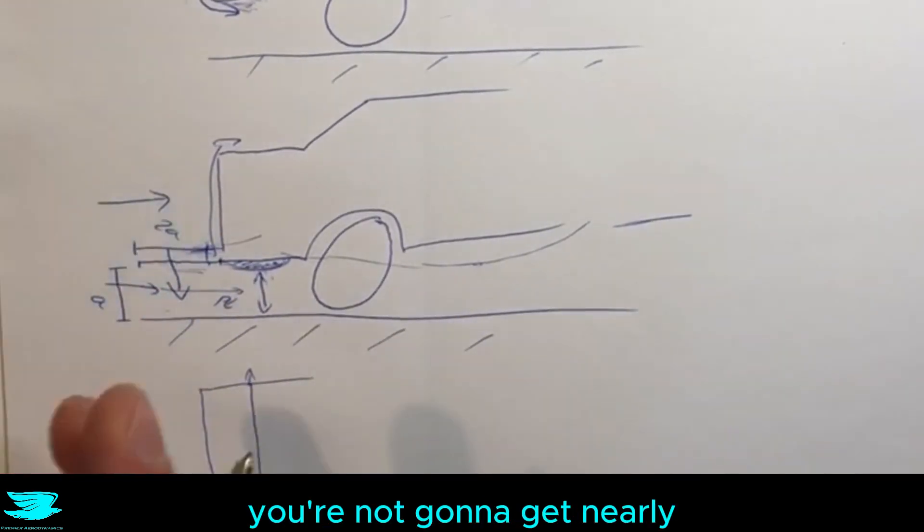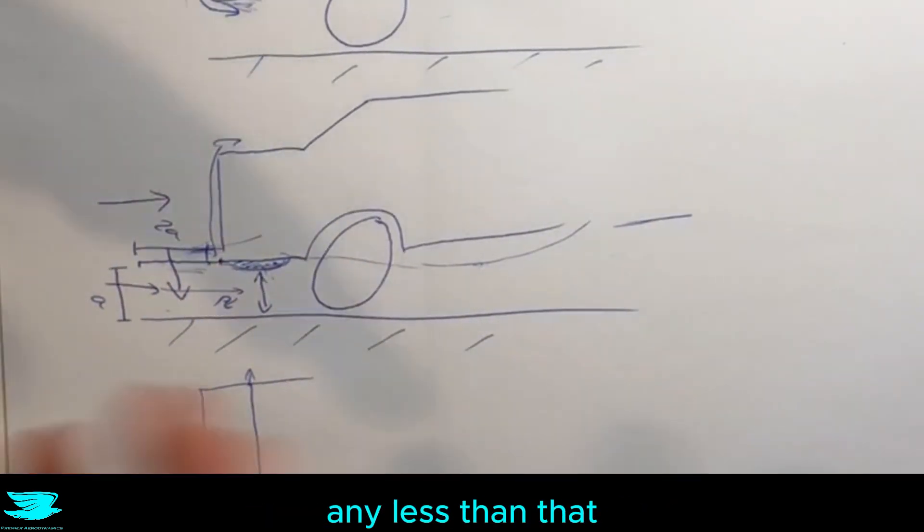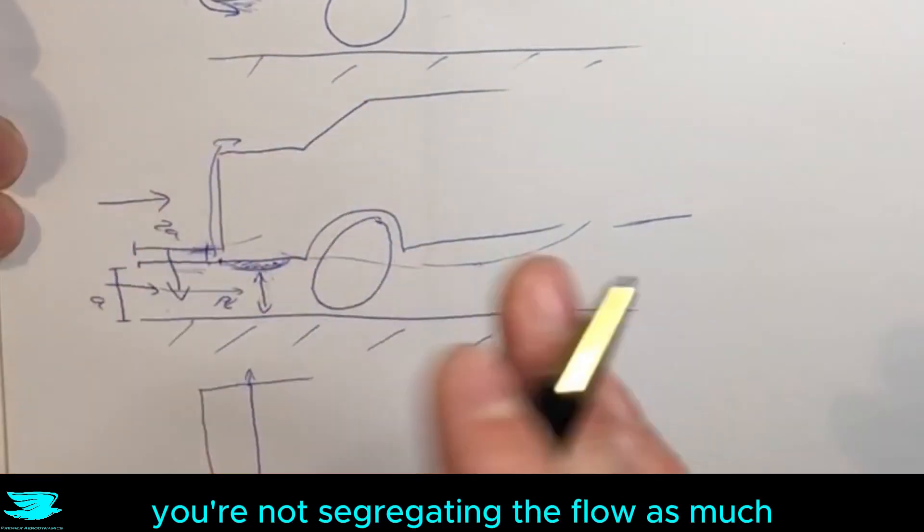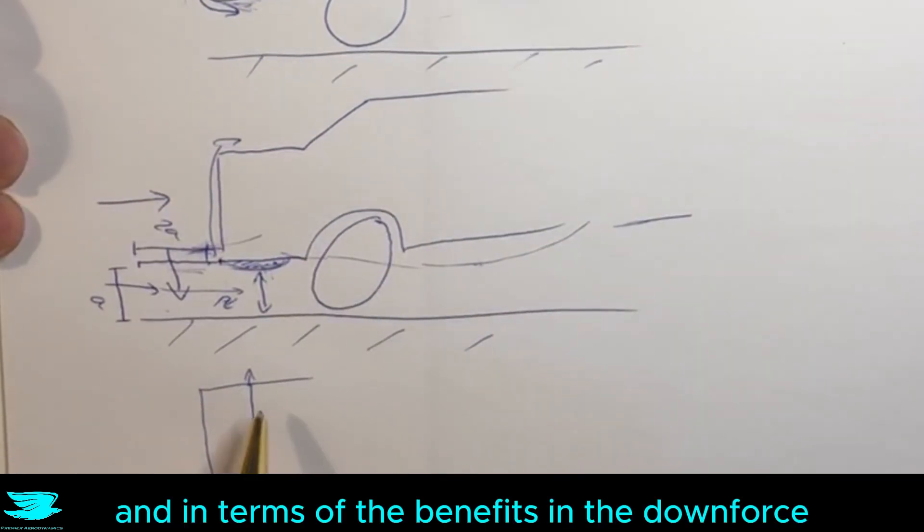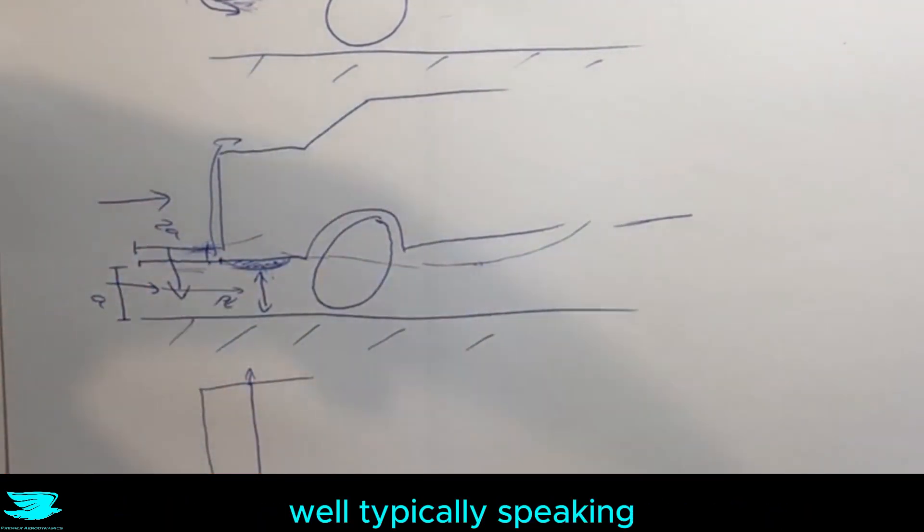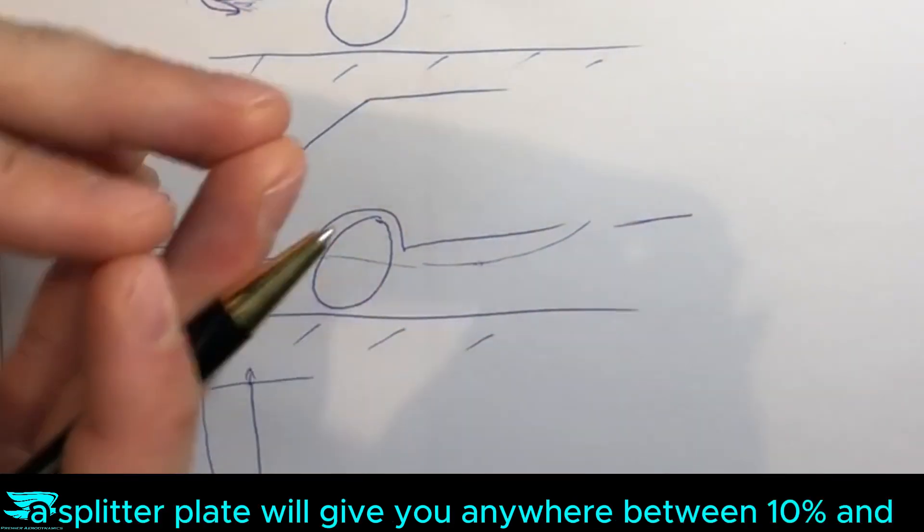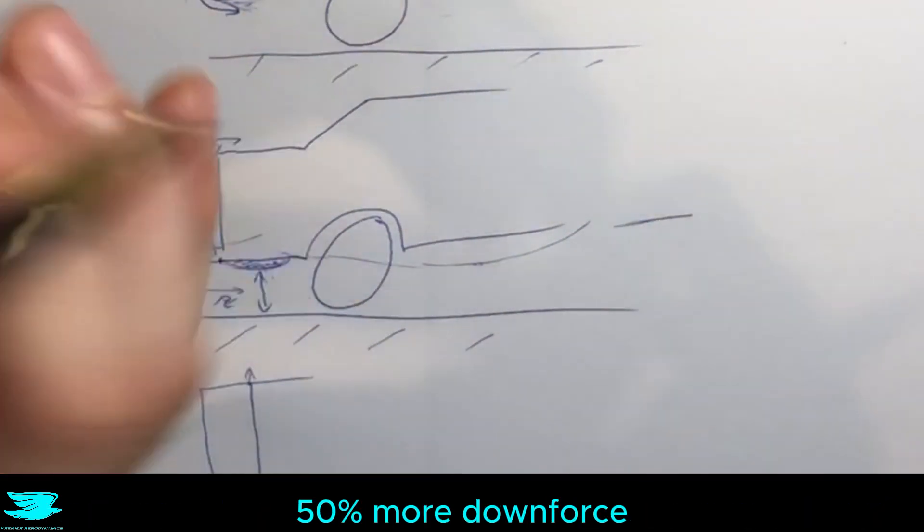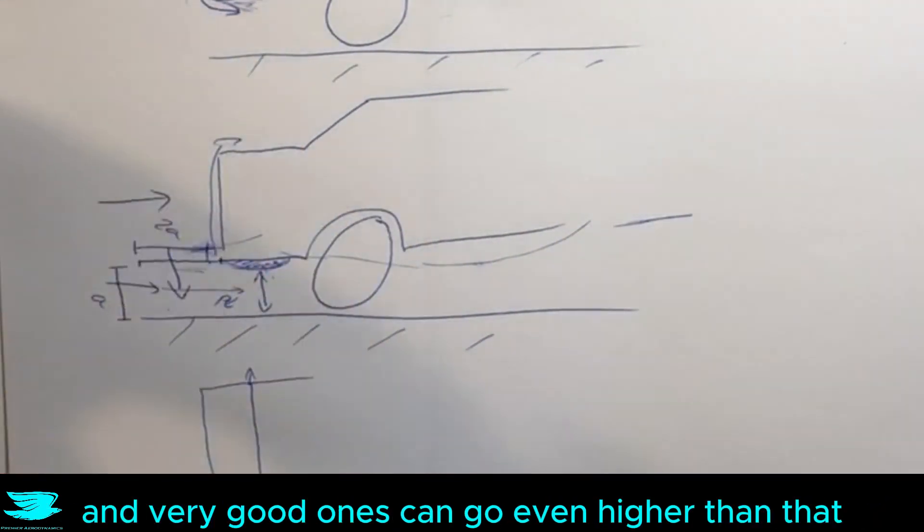Any more than that, you're not going to get nearly that much more benefit, any less than that, you're not segregating the flow as much. And in terms of the benefits in terms of downforce, well, typically speaking, a splitter plate will give you anywhere between 10% and 50% more downforce, and very good ones can go even higher than that.